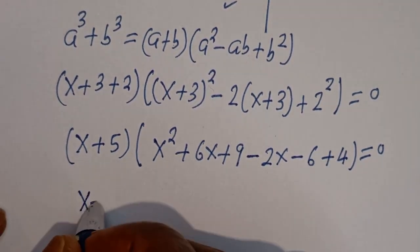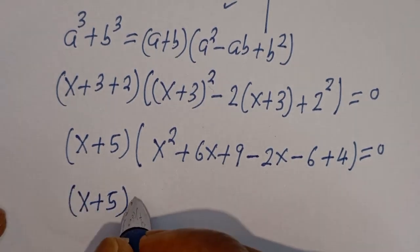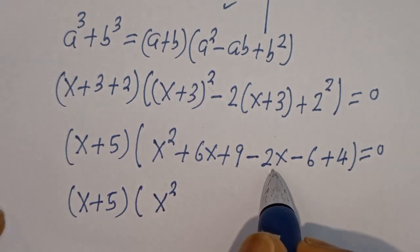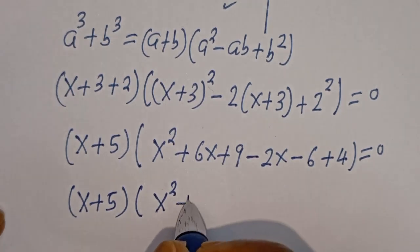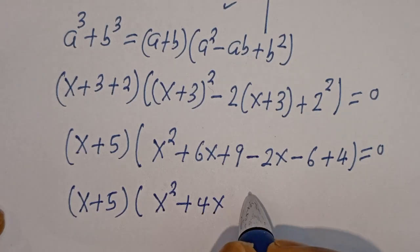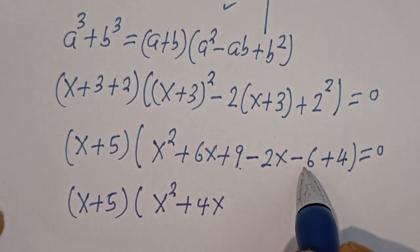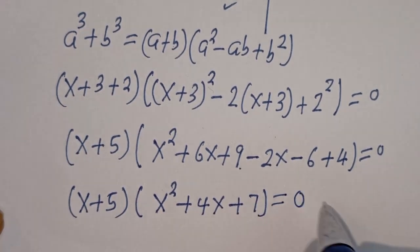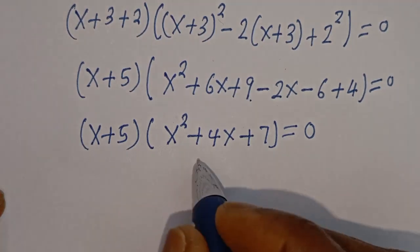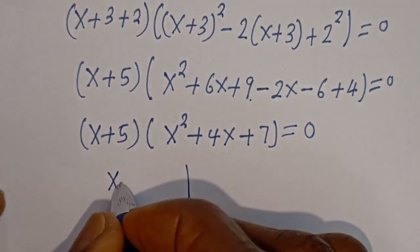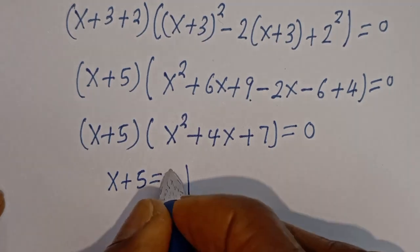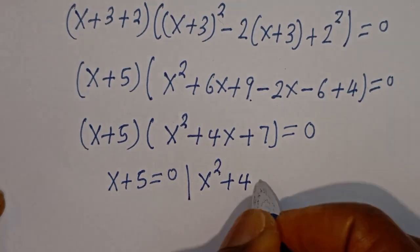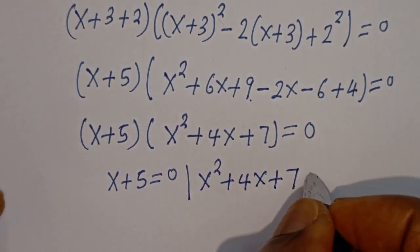Here we have x plus 5, bracket, x squared plus 4x plus 7, equals 0. Then from here there are two cases: the first case is x plus 5 equal to 0, and the second case is x squared plus 4x plus 7 equals 0.